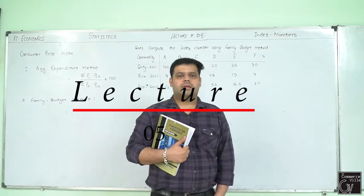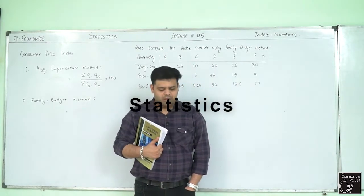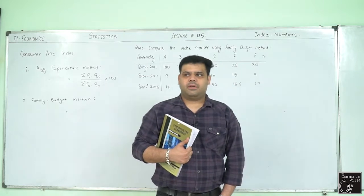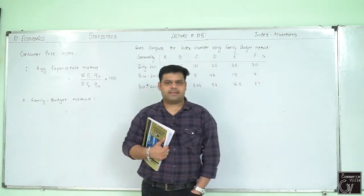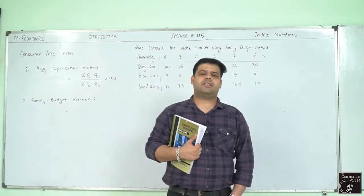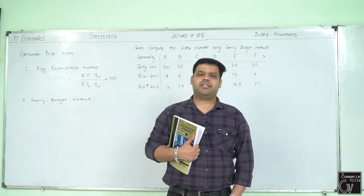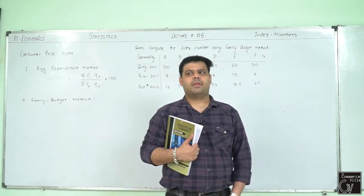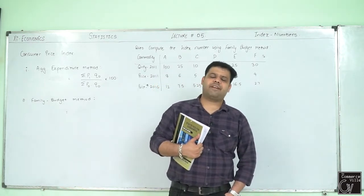Good day students. This is index number of statistics, lecture number 5. And we are doing consumer price index. In consumer price index, there are two methods that I have told you. First is aggregate expenditure. The second is family budget method. Now we are going to aggregate expenditure method which we have already done in the last lecture and now we are going to family budget method.